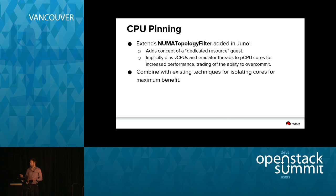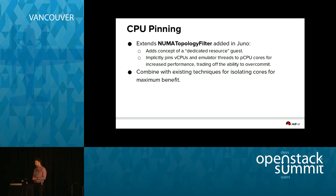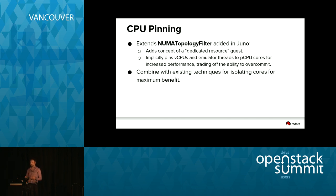You also need to combine these configurable options with existing techniques for isolating cores. For example, if I have four CPU cores in my host and I pin guests to all of those, my host processes and vSwitch are still bouncing around somewhere inside that node — so you're not getting the deterministic performance you're after unless you also pin host processes somewhere.